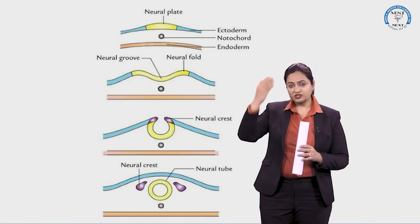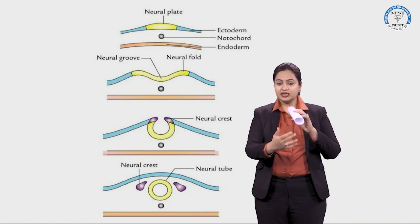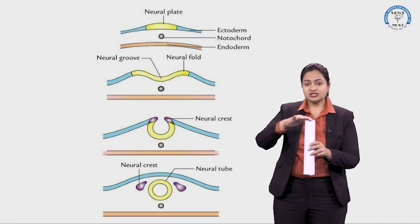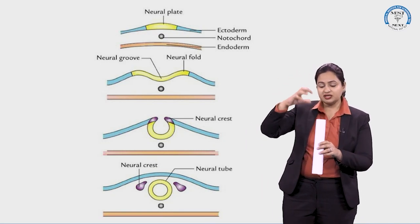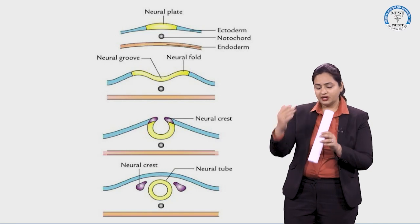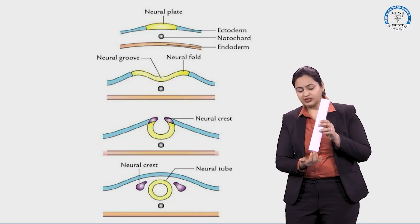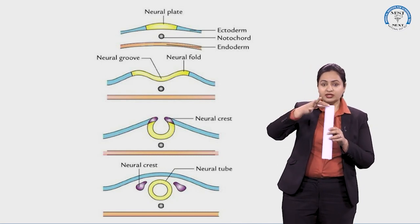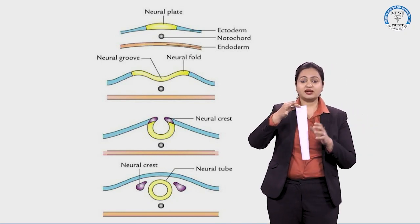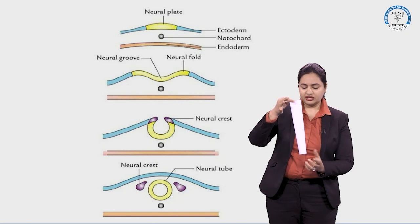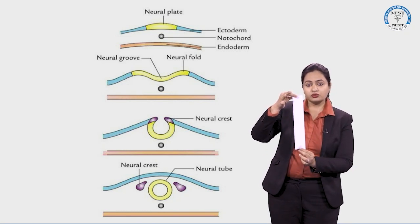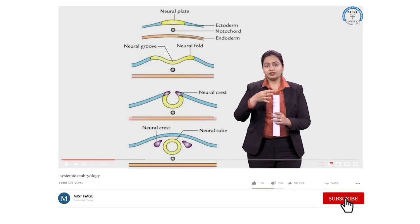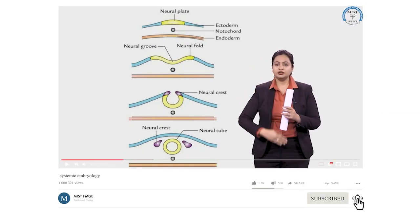The neural tube extends from cranial to caudal and is still open on both ends. The opening on the head side is termed the cranial neuropore, and the opening on the tail side is the caudal neuropore. The cranial neuropore closes by the 25th day of intrauterine life, and the caudal neuropore closes by the 28th day, after which a closed neural tube is formed.